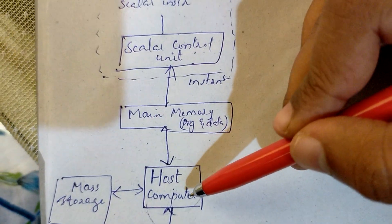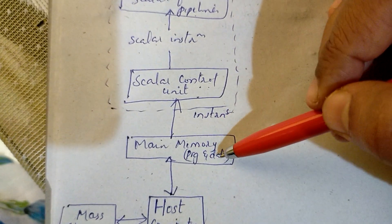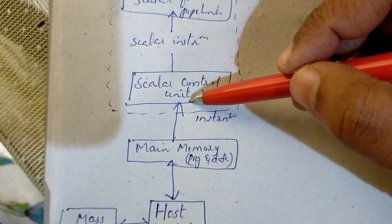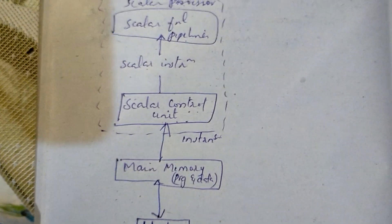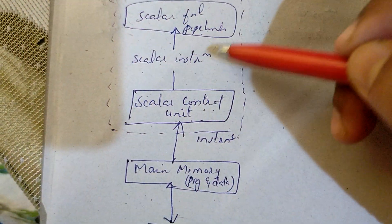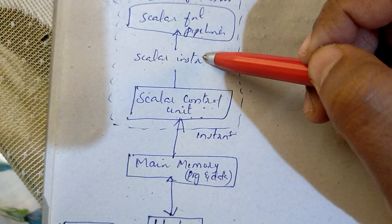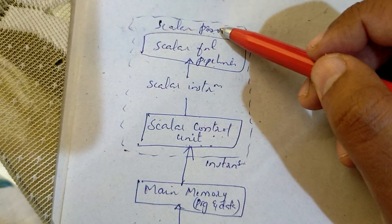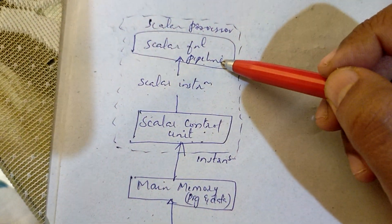So, when we use the host computer, we use the main memory for the program and data. That is why instructions are decoded in the Scalar Control Unit. If you decode the instructions, those that are program control operations will be executed by the Scalar Processor with the help of Scalar Functional Pipelines.